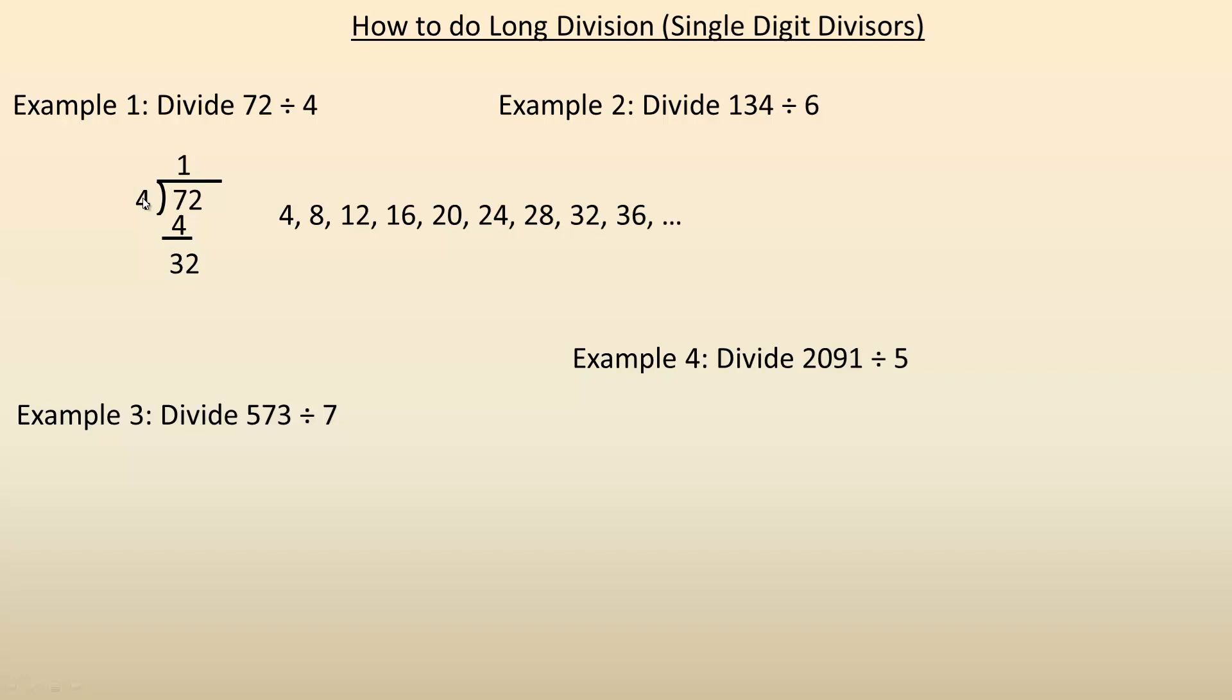So now you ask yourself, how many times does 4 go into 32? So refer back to your multiplication tables or write out the multiples of 4. We're dividing 4 into 32. So 1, 2, 3, 4, 5, 6, 7, 8. It's actually a whole multiple. 32 is the 8th multiple of 4. So 8 times 4 is 32. So 4 goes into 32 8 times, so we put 8 here. 8 times 4 is 32.